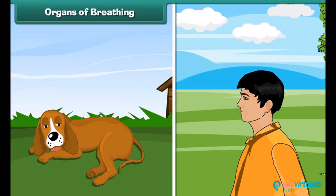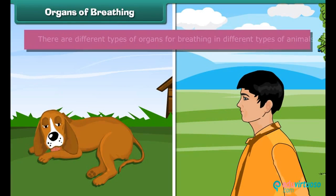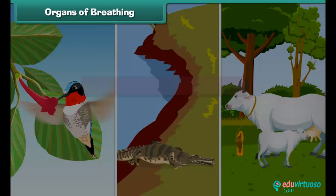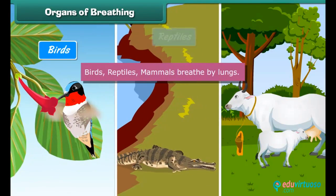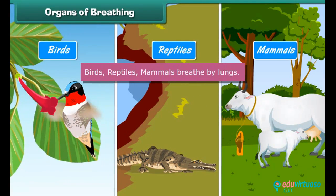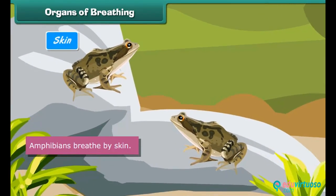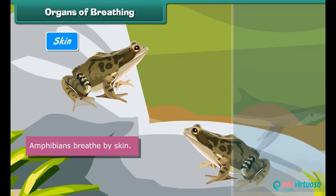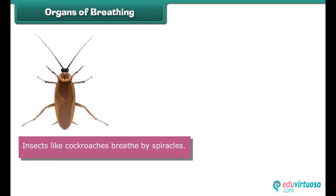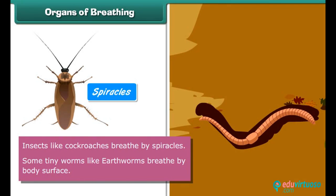Organs of breathing: There are different types of organs for breathing in different types of animals. Birds, reptiles, and mammals breathe by lungs. Amphibians breathe by skin. Fish breathe by gills. Insects like cockroaches breathe by spiracles. Some tiny worms like earthworms breathe by body surface.